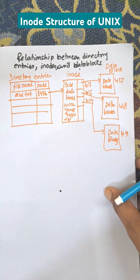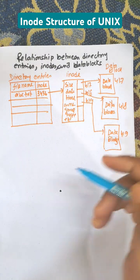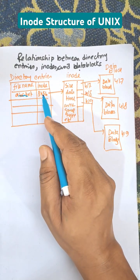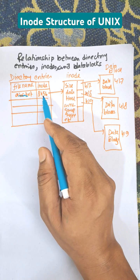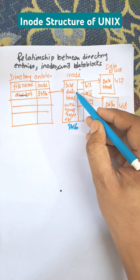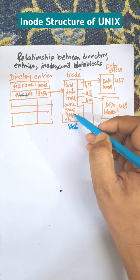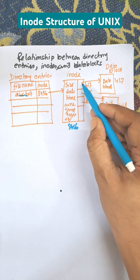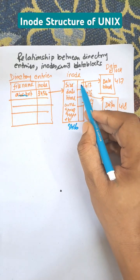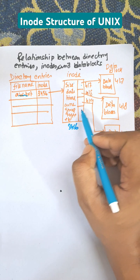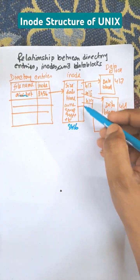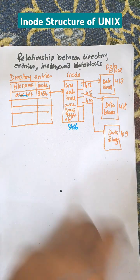Relationship between directory entries, inode, and data blocks. Suppose this is the directory entry and the file name is abc.txt, whose inode is 3456. So it connects to the 3456 inode number where size, date, time, owner, group, types, etc. are stored, and there are pointers that point to the direct data blocks. That is data blocks 417, 418, and 419. So this is the example where directory entry, inode entry, and data blocks are connected together.